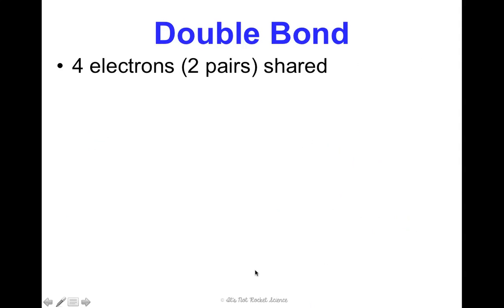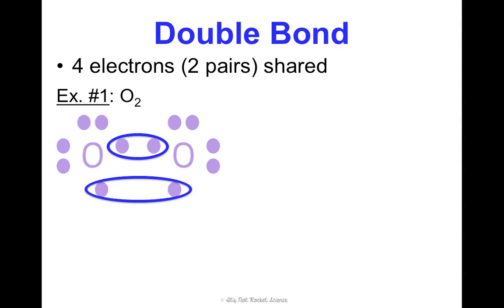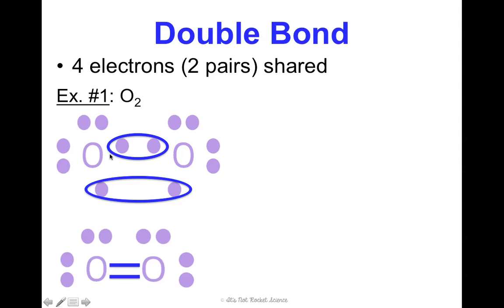Let's try a double bond. A double bond is when four electrons, or two pairs of electrons, are shared. Let's look at oxygen gas, O₂. There's one oxygen and a second oxygen. You may wonder how the individual electrons end up right next to each other — it works out when you place them around the atom in order. When I circle them to show they share, they're just right next to each other. Draw exactly what you just did, but now with dashes instead of circles. Each oxygen has a pair and a pair on the outside, and the two circles become two dashes to represent the double bond.